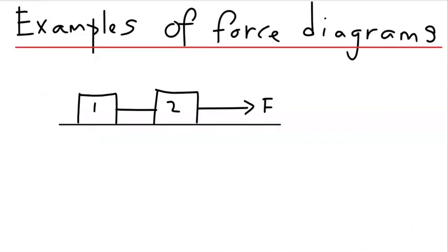Let's look at examples of how to construct force diagrams for a particular system. What we have here is a system that consists of two bodies — body 1 and body 2 — where body 2 is being pulled by a force F. The two bodies are connected by a string, which has tension in it. We want to write down an expression for the acceleration, so we need to sketch all the forces that act on body 1 and body 2. Since there are two bodies, there should be two separate diagrams.